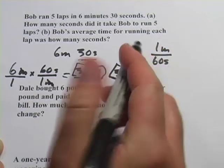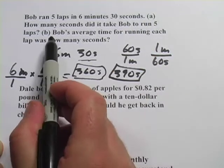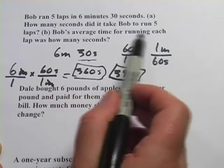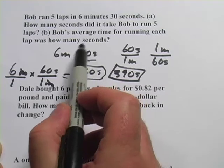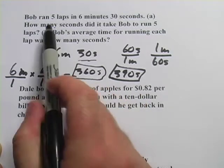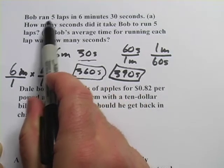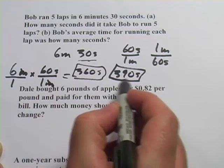It's a lot of work already just for part A. Let's go on to part B. It says Bob's average time for running each lap was how many seconds. You recall he ran five laps in this amount of time.